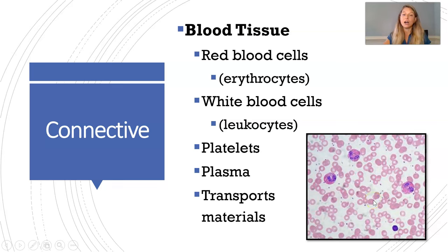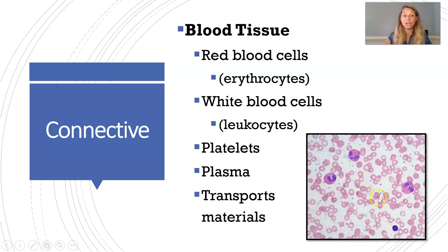Blood tissue is also a connective tissue — it has different types of cells working together to perform a common function: moving nutrients and gases around the body. We have red blood cells, called erythrocytes, which are the abundant small pink circles. Then white blood cells, called leukocytes, which are larger cells. Then platelets, the tiny dots needed for clotting. And finally plasma, the fluid between cells that is mostly water, along with transport materials such as electrolytes and nutrients.